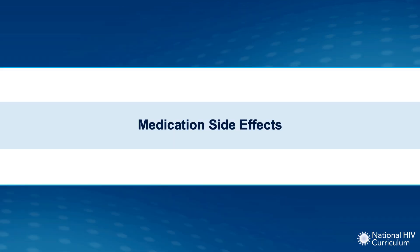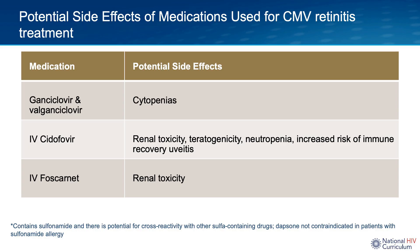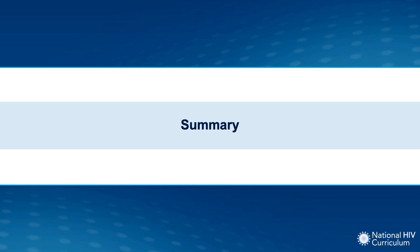With valganciclovir and ganciclovir, you can see cytopenias. With both IV cidofovir and foscarnet, you can see nephrotoxicity. IV cidofovir is also a teratogenic drug, and there is also a risk of neutropenia as well as an increased risk of immune recovery uveitis.